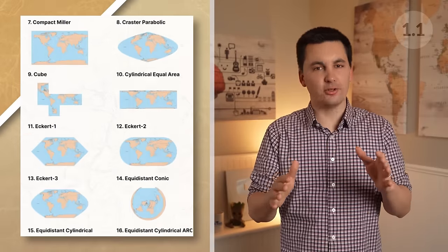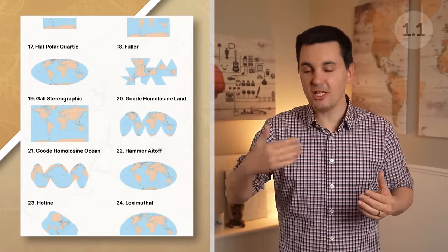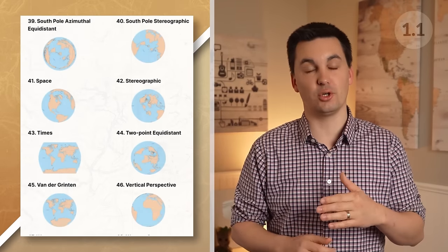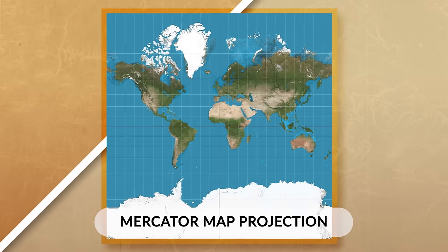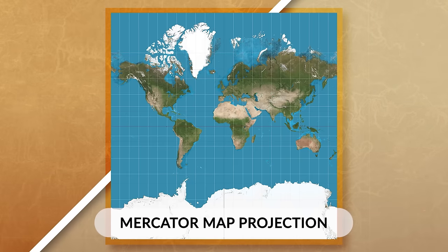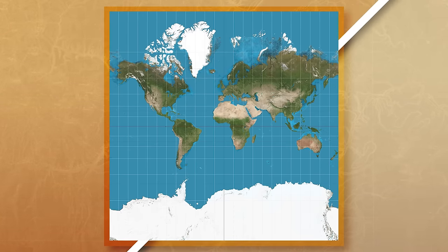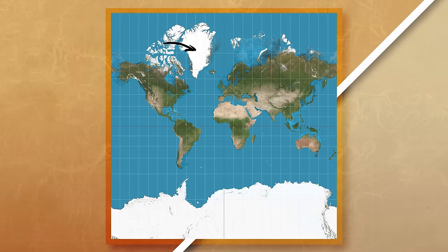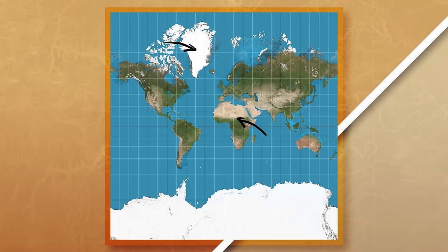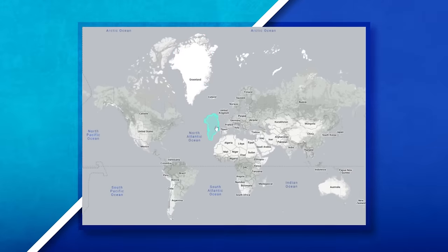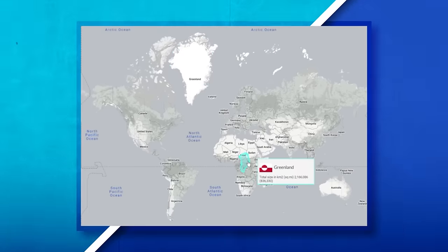There are hundreds of different map projections and each of them have different uses, but for AP Human Geography you only have to be familiar with a few. The Mercator map projection is a conformal projection and is excellent at showing accurate direction, which is one of the reasons why it was used for naval expeditions. But this projection has significant distortion in the size and location of land masses. The map gives the illusion that Greenland is larger than Africa, when in reality Africa is more than 14 times larger than Greenland.